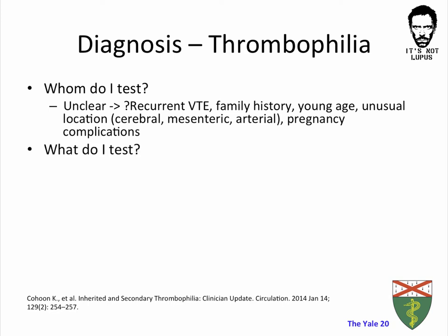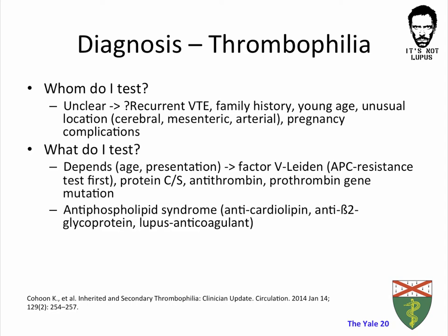The second question: what do I test? An appropriate start to thrombophilia screening is testing for the five most common heritable thrombophilias: Factor V Leiden — for which you start with an APC resistance test first — Protein C, Protein S, antithrombin levels, and prothrombin gene mutation. If you are suspecting antiphospholipid syndrome, you should test for anti-cardiolipin, anti-beta-2 glycoprotein, and lupus anticoagulant. It is important to keep in mind that only a minority of patients with unprovoked VTEs has one of these five major heritable thrombophilias, suggesting that other minor genetic factors may be involved which are not routinely tested for.